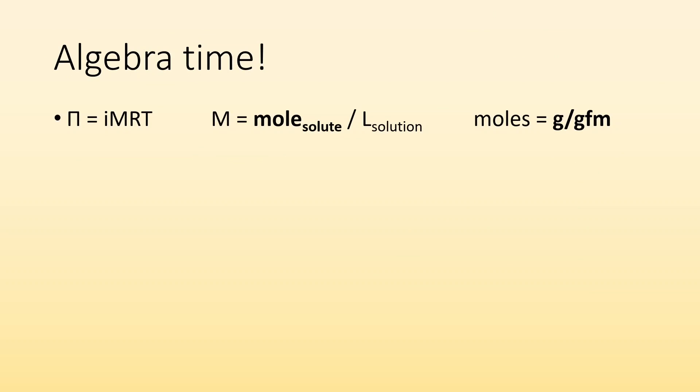We know that the osmotic pressure pi equals IMRT. We know that molarity, that capital M, is moles of solute per liters of solution. And I know that moles is, again, grams divided by GFM. So, if I took that grams divided by GFM and plugged it in for moles and molarity, I get grams divided by GFM divided by liters of solution is my molarity.